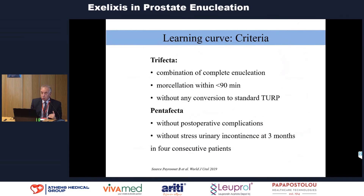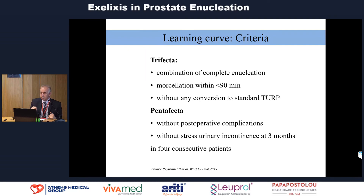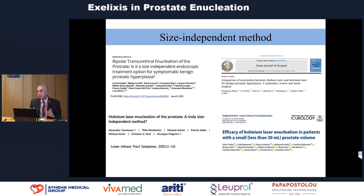To define the level of experience, we need to adopt the trifecta or pentafecta. Trifecta includes complete enucleation and morcellation within less than 90 minutes without any conversion to standard TURP. Pentafecta adds two additional criteria: the absence of any post-operative complication and the absence of stress urinary incontinence at three months after the procedure in four consecutive patients. Many papers indicate that enucleation is a size-independent method.